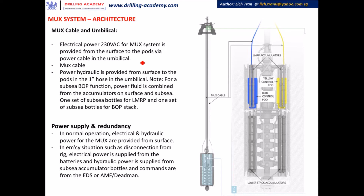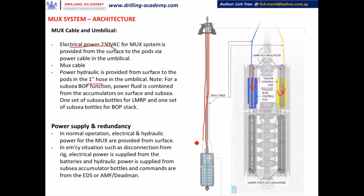Here we discover other major components of the MUX system. We have the MUX cables going down from surface to the pods — to the yellow pod and the blue pod. Together with this MUX cable in the umbilical, we have the electrical power supply cable to supply 230 volt AC to the pods, to the electronic parts, and to the solenoid valves. In the umbilical we also have the 1-inch diameter hose to carry the surface-supplied power fluid from the accumulators on the surface. In normal operation, electrical and hydraulic power supply for the MUX are provided from surface. But in emergency situations such as disconnection from the rig, electrical power is supplied from the batteries within the pod, hydraulic power supply is from the subsea accumulator bottles, and commands are sent from the EDS emergency disconnection system, or the automatic mode function, or the deadman system.